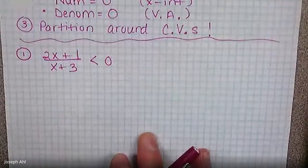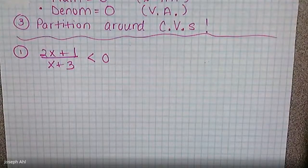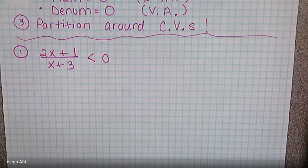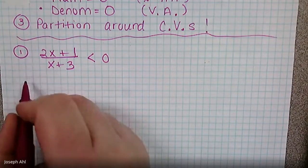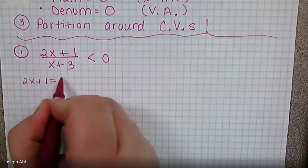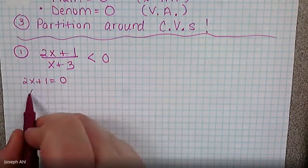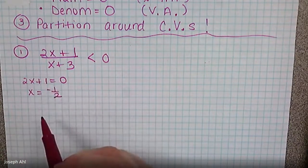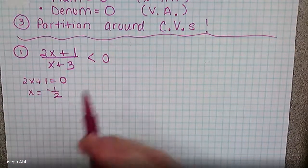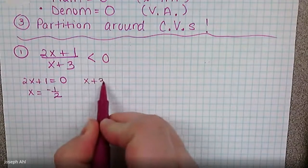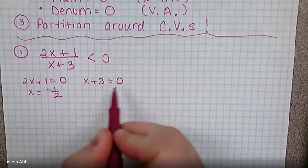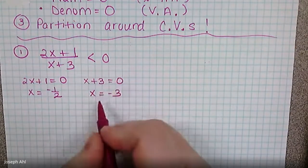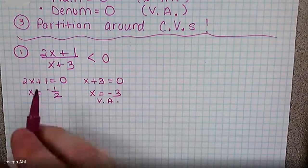For this first example, the inequality is already set to zero, so there's nothing additional we have to do. To find where we cross the x-axis, set the numerator equal to zero. Solving gives x equals negative one-half — that's one point to partition around. Setting the denominator equal to zero, x plus three equals zero gives a vertical asymptote at x equals negative three.